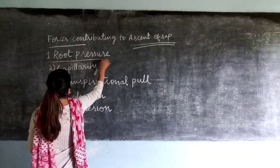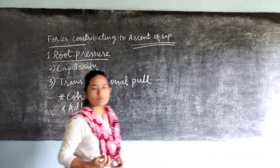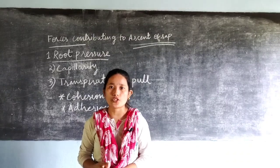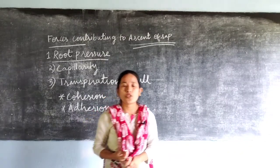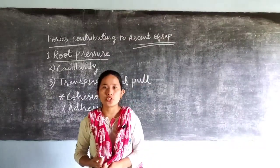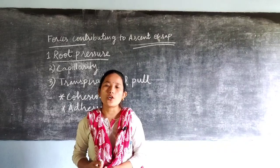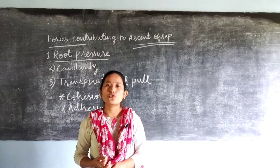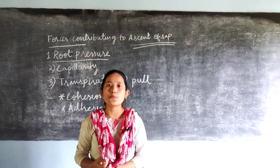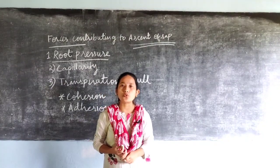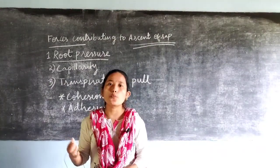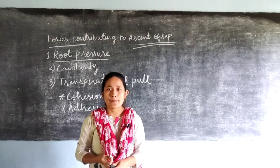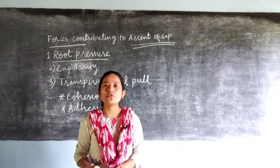First, we will be discussing root pressure. The name itself signifies that a pressure is created in the root region. Because of simultaneous osmosis taking place through the cells of the root, a certain pressure is generated within the root region which helps in the movement of sap from the root region to the other parts of the plant.